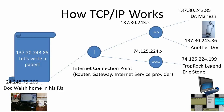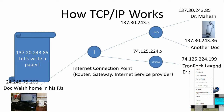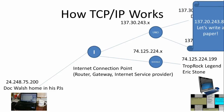Here's a message: 'Let's write a paper.' I want to send this to Dr. Mahesh. The IP address of the recipient is written on the message, and that's how the network knows to send it to Dr. Mahesh. When it goes across the central internet connection, that connection doesn't need to know where every IP address goes — it just needs to know the hierarchy. The UNO node is 137.30.243.x, so the internet sends any message beginning with those first three numbers to the UNO node, which then forwards it to Dr. Mahesh.